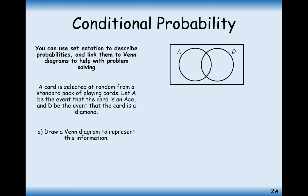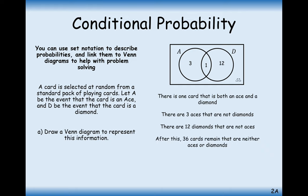In this question here, a standard question where we have A representing aces and D representing diamonds. There's only one card that is the ace of diamonds. There are three more aces in the pack, 13 diamonds in total, so take away one, you've got 12 diamonds left. On the outside, you've got 36 playing cards remaining—all of the spades, hearts, and clubs that are not aces.